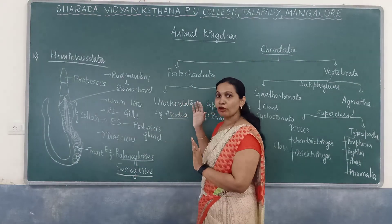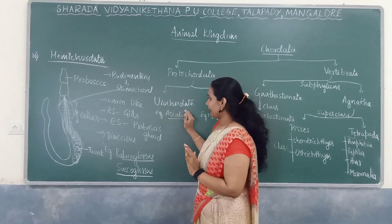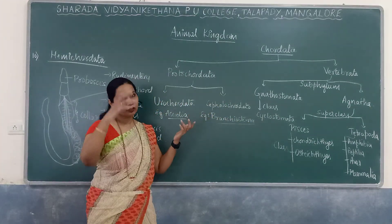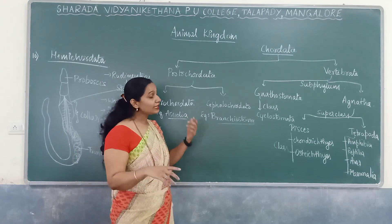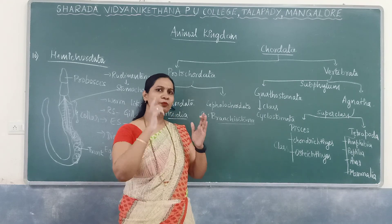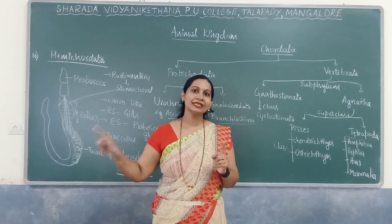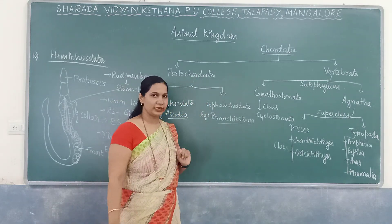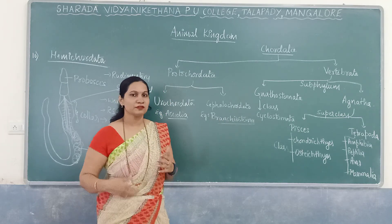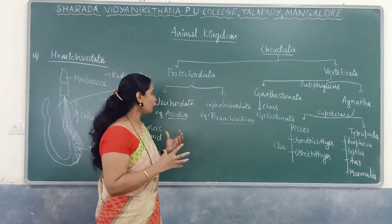In Urochordata, notochord is found in the larval tail — example is Ascidia. In Cephalochordata, 'cephala' refers to head; the notochord extends from head to tail and is present in both larval and adult stages. Example is Branchiostoma (Amphioxus), also known as lancelet due to its body structure.